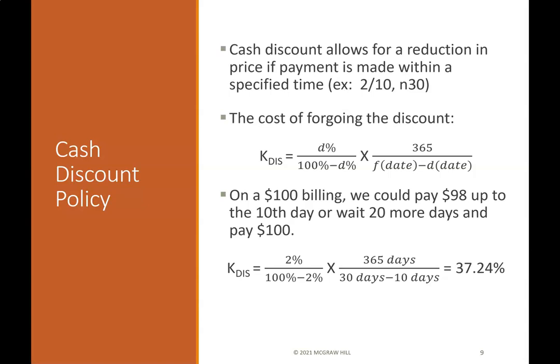For example, a 2% discount if paid in 10 days, or the full amount in 30 days. The cost of foregoing the discount is: K-dis equals D% divided by (100% minus D%), times 365 divided by (F-date minus D-date).